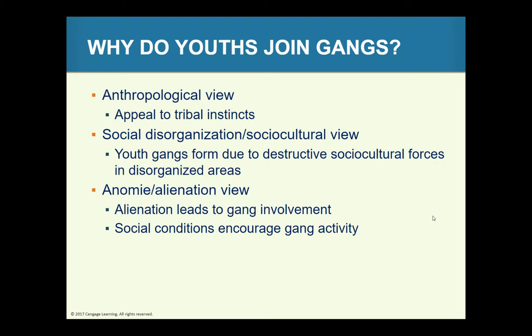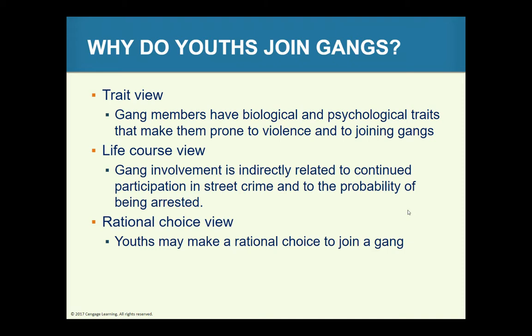With anomie, alienation leads to gang involvement, where social conditions encourage gang activity — drug dealing and protection in HUD neighborhoods. With the trait view, we look at biological and psychological traits that might make people prone to violence and joining gangs. The life course view holds that gang involvement is indirectly related to continued participation in street crime and the probability of being arrested. The rational choice view suggests that youths may make a rational choice to join a gang.